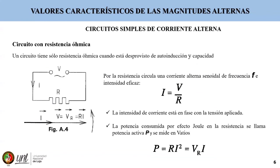Vamos a pasar a ver de forma rápida los circuitos simples de corriente alterna. Un circuito con resistencia ómica tiene solo resistencia cuando está desprovisto de autoinducción y capacidad. Por ejemplo, una ducha, que es una resistencia pura. Por la resistencia circula una corriente alterna senoidal de frecuencia e intensidad eficaz. La intensidad de corriente está en fase con la tensión aplicada, y la potencia consumida por efectos Joule se llama potencia activa, se denota con P, y se mide en vatios. Su ecuación es resistencia por intensidad cuadrada, o voltaje resistivo por intensidad.